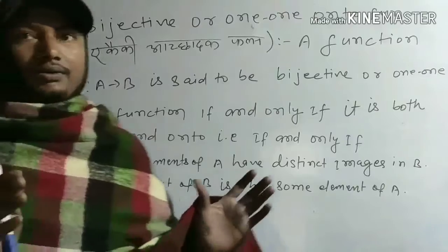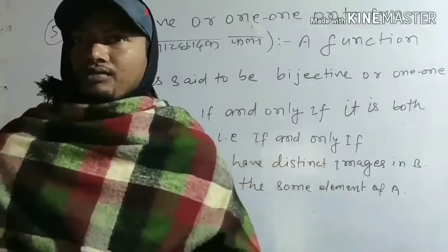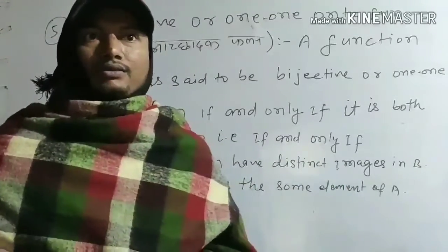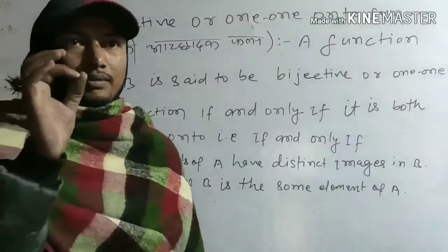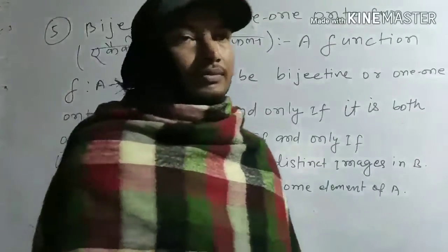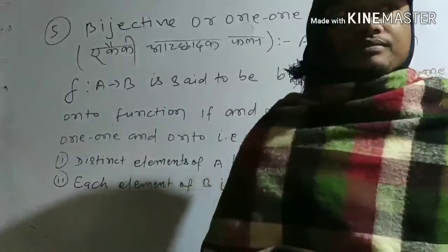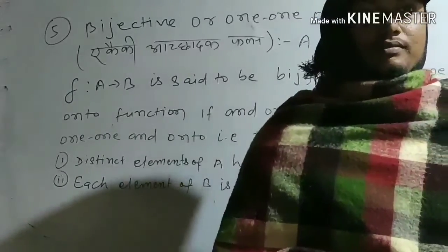So, the first property gives us one-one and the second property gives us onto. A function that is both one-one and onto - what do we call it? Bijective function, right?